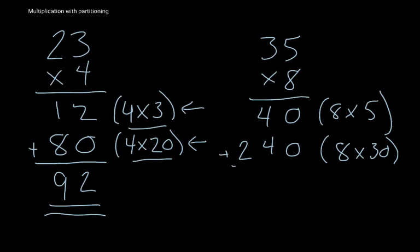And now I just add them. 0 and 0 is 0, 40 and 40 is 80, and 200 and nothing is 200. And so my final answer is 280.